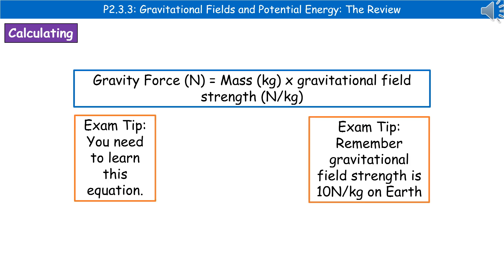On your exam, they could ask you to calculate using the formula: gravity force equals mass in kilograms times the gravitational field strength. This is one of those formulae that you do need to remember — they're not going to give it to you on your data sheet. So make sure you've found a way to learn that, and also remember that on Earth, our gravitational field strength is 10 newtons per kilogram.